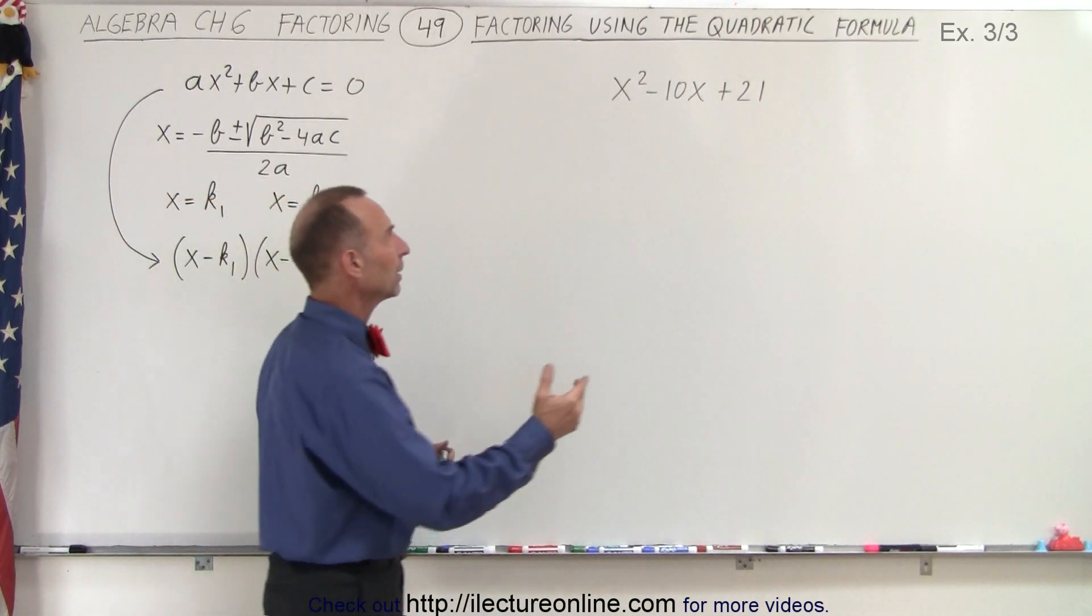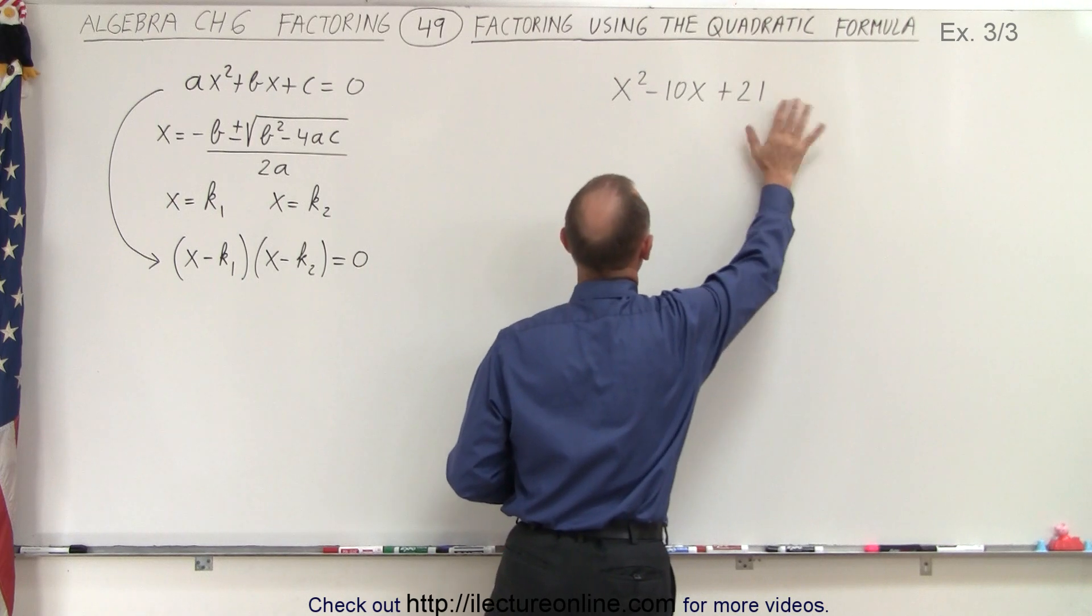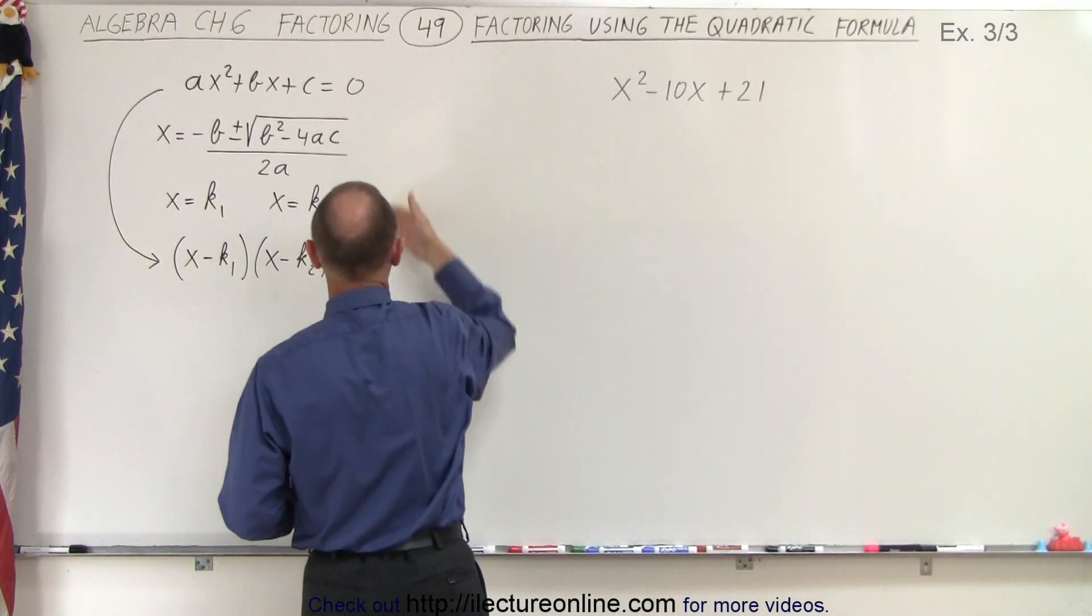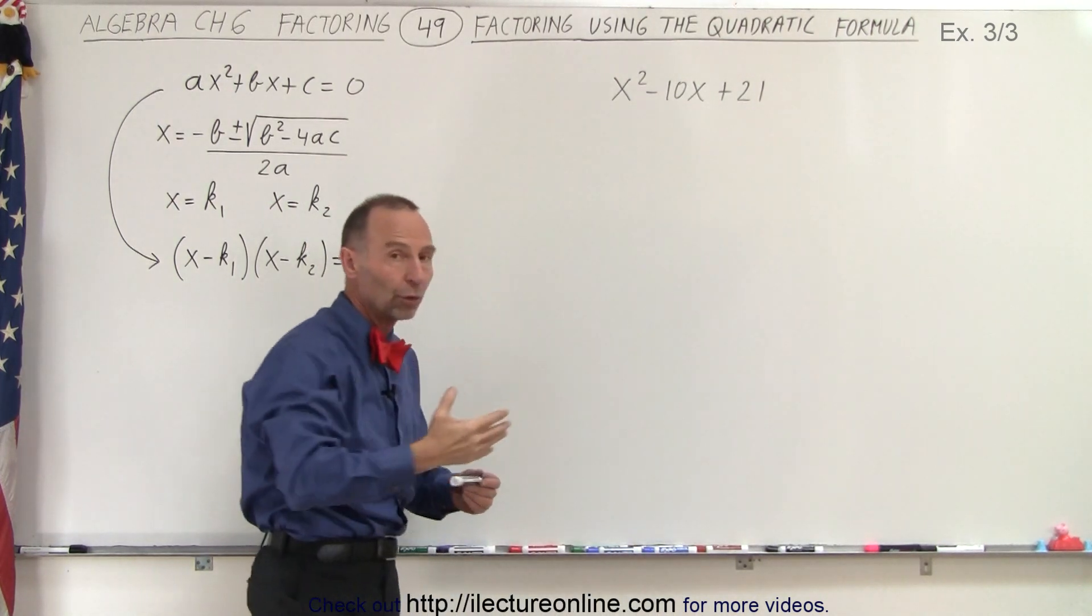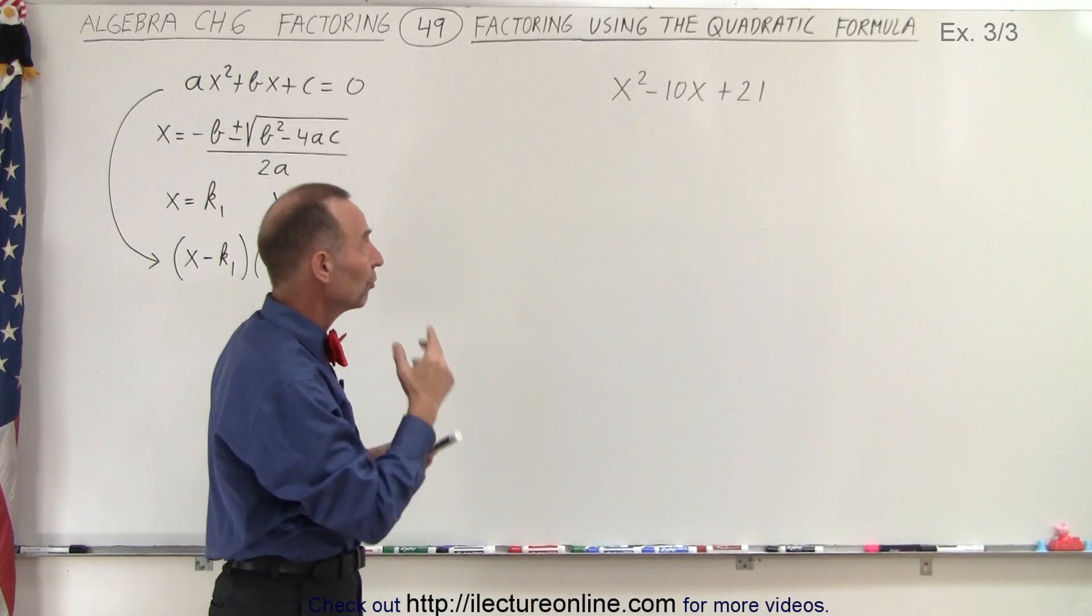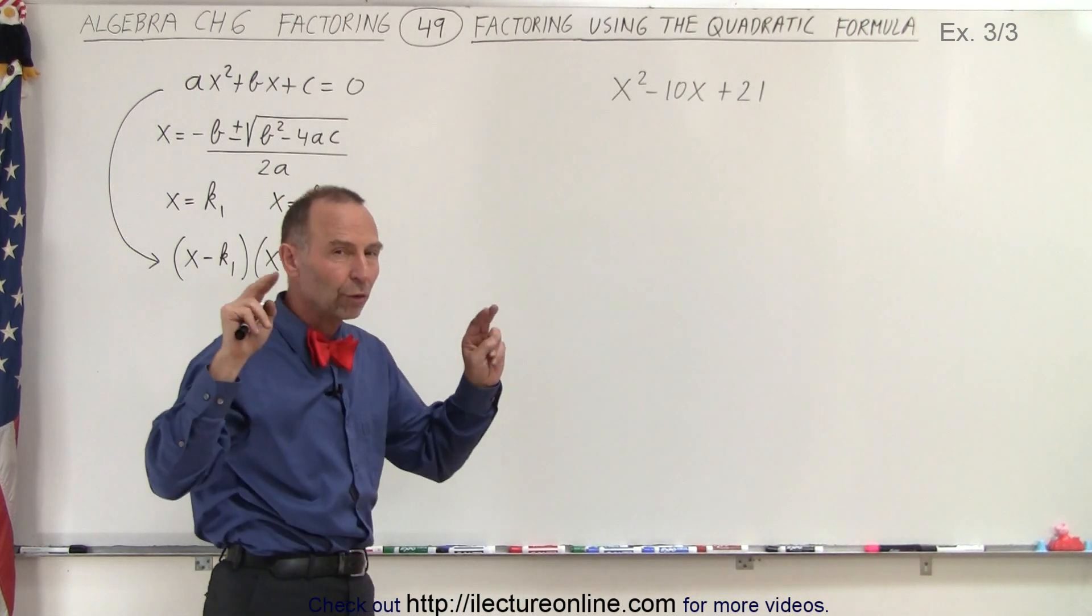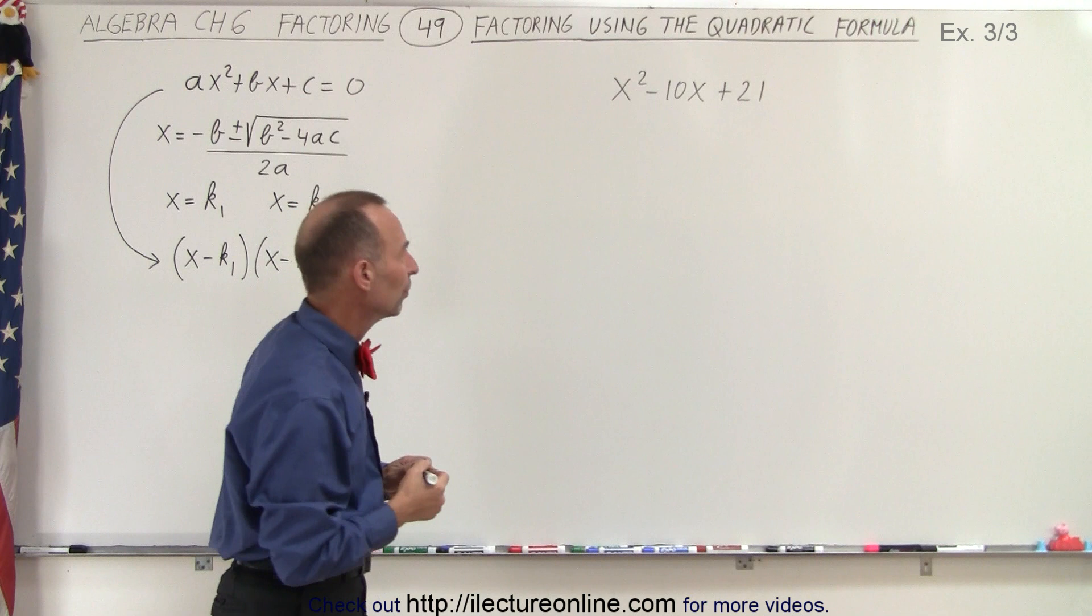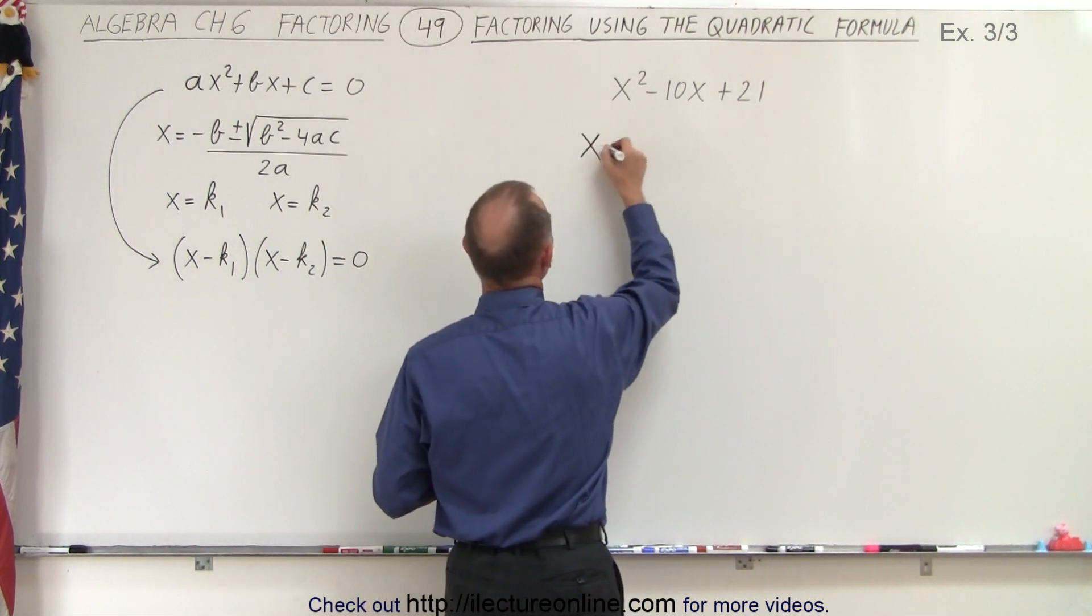So again, we're going to assume that this is equal to 0, even though it's not equal to 0. We're going to use this technique and then just ignore the equal to 0 part and use the very same technique to what we call solve the quadratic equation.